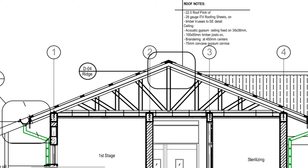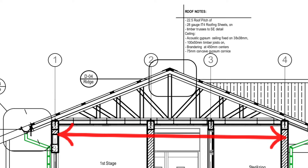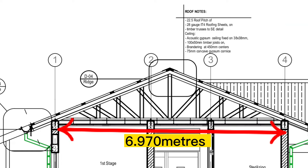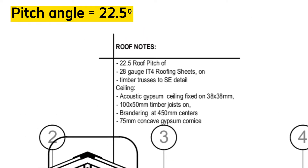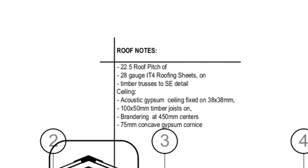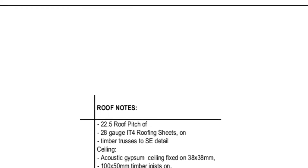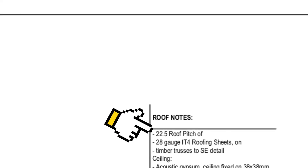Now let's find the total length for a single roof truss. The span here is 6.97 meters, from grid line 1 to grid line 4. The pitch angle is usually given in the structural drawing. For cases where it's not specified, divide the span by 4 to get a safe rise and pitch angle. For our case, the pitch angle is specified in the drawing as 22.5 degrees.